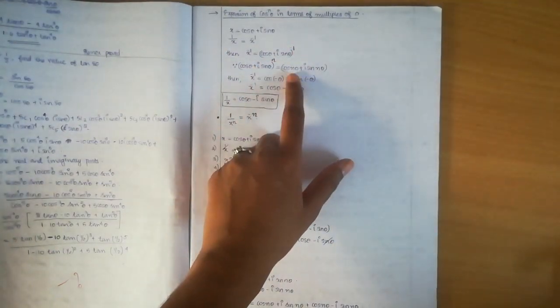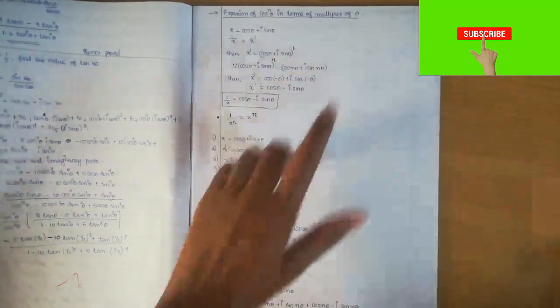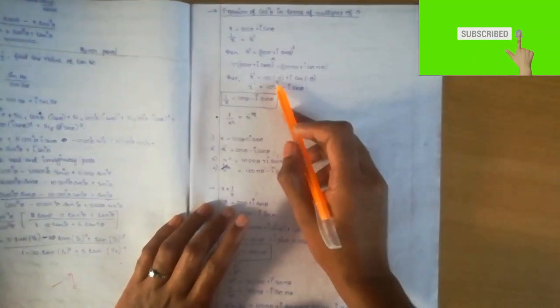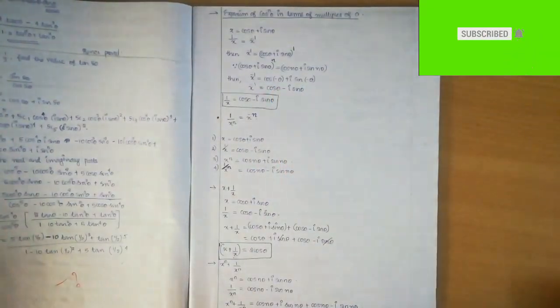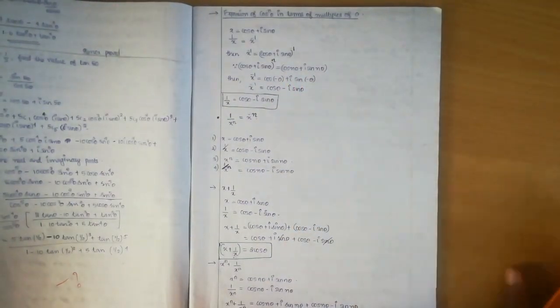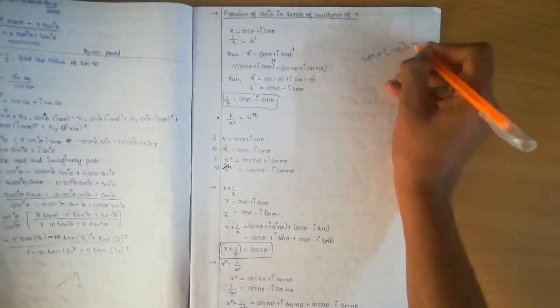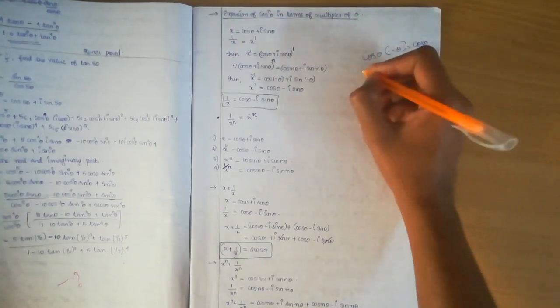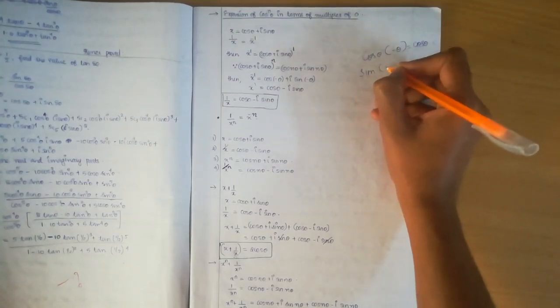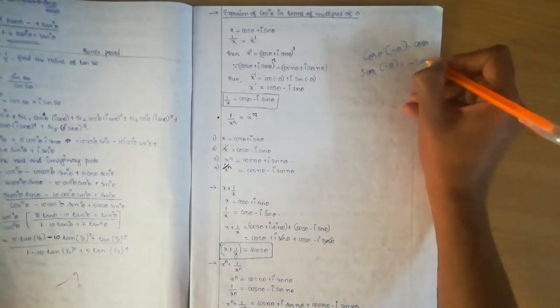That gives us cos of minus theta plus i sin of minus theta. Now, cos of minus theta equals cos theta, and sin of minus theta equals minus sin theta. So cos of minus theta is cos theta, and i sin of minus theta is minus i sin theta.